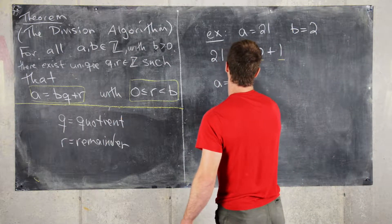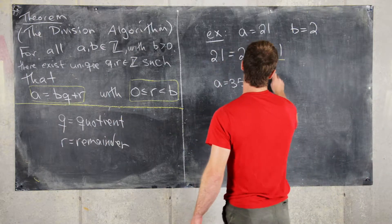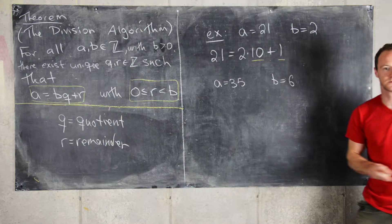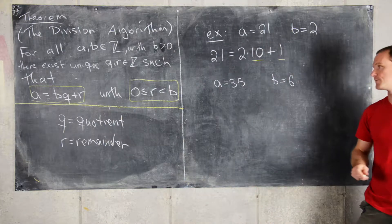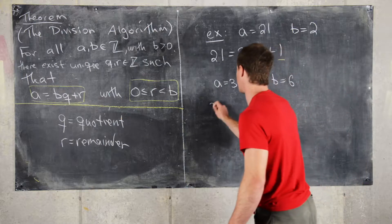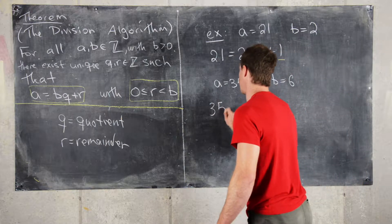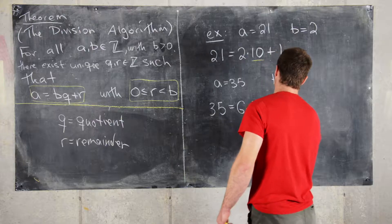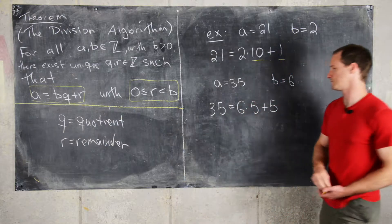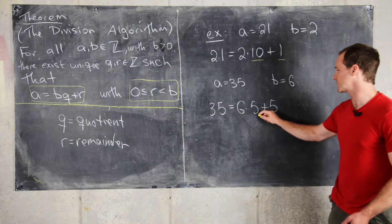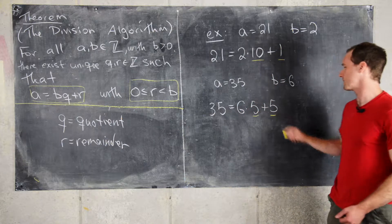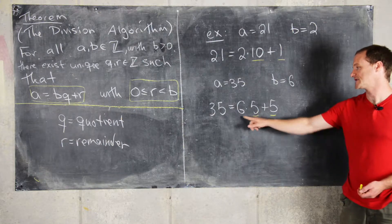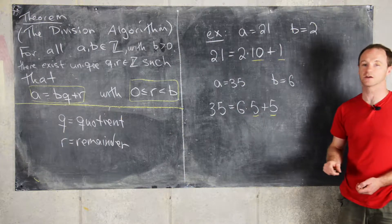Let's look at another example with A equals 35 and B equals 6. We can write 35 as 6 times 5 plus 5. In this case, our quotient is 5 and our remainder is also 5, and the remainder lies between 0 and 6 but does not include 6.